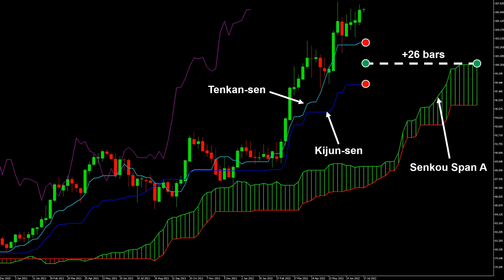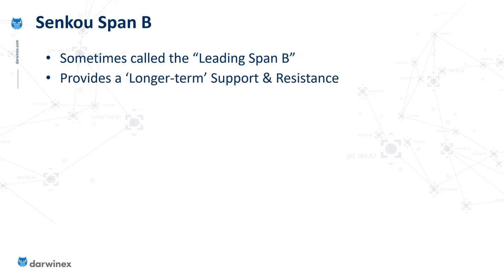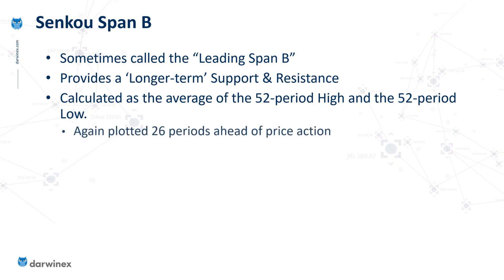Let's now compare that to the Senku Span B line, again sometimes termed the Leading Span B. Here, this gives a much longer-term view of support and resistance levels. Because now it's calculated as the average of the highest high and the lowest low over 52 periods of price action, but in exactly the same way, it gets plotted 26 periods ahead of that most recent price action.